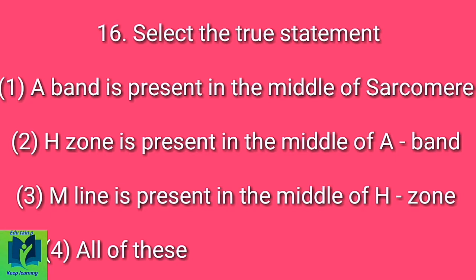Option A: A band is present in the middle of sarcomere. Option B: H zone is present in the middle of A band. Option C: M line is present in the middle of H zone. Option D: All of these.